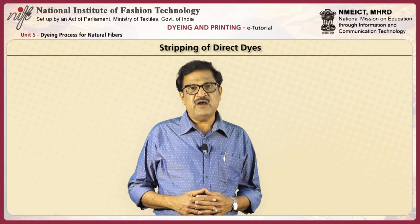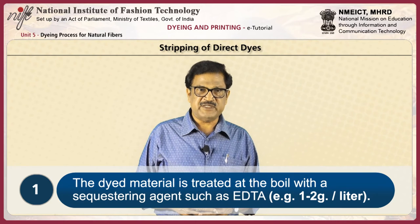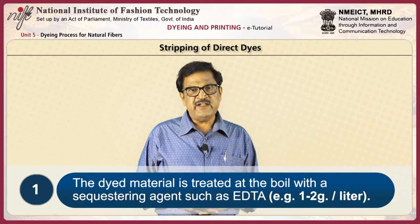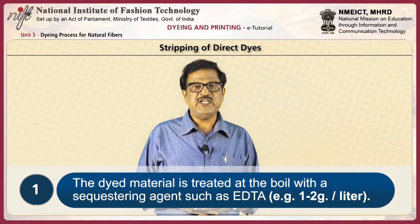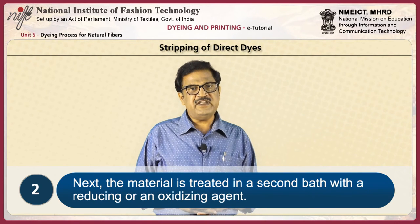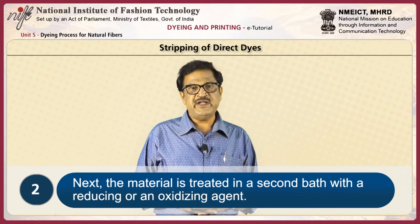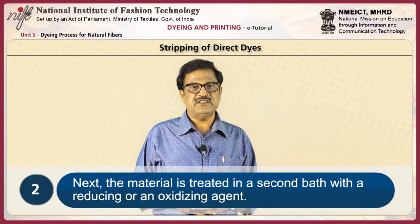Stripping of direct dyes consists of two steps. First, the dyed material is treated at the boil with a sequestering agent such as EDTA, for example 1 to 2 grams per liter. After this, the material is treated in a second bath with a reducing or an oxidizing agent.